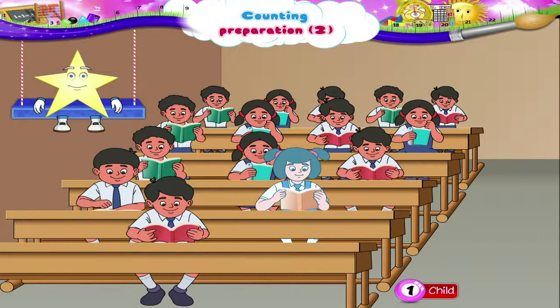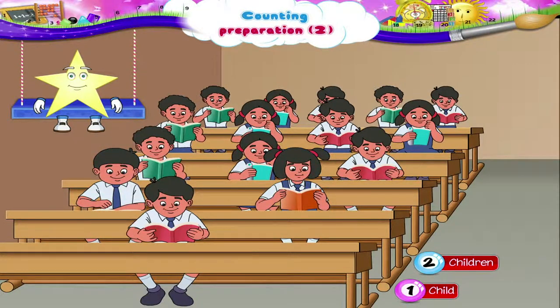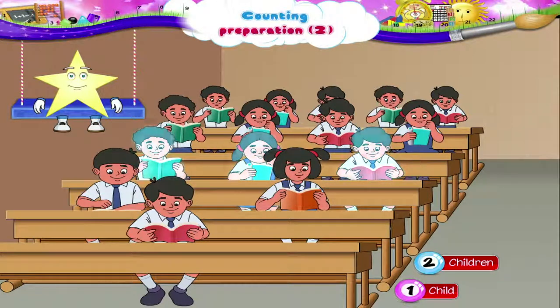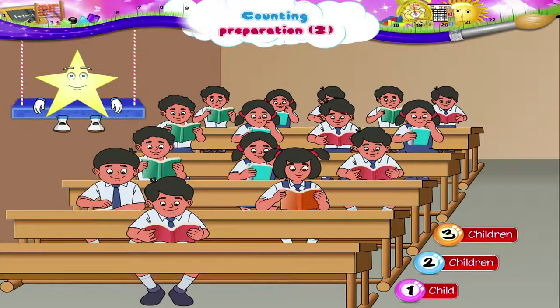1, 2, these are 2 children. 1, 2, 3, these are 3 children.